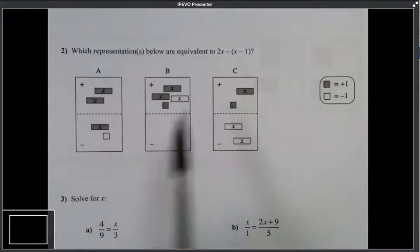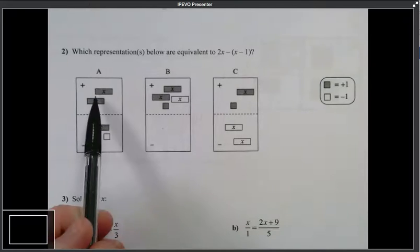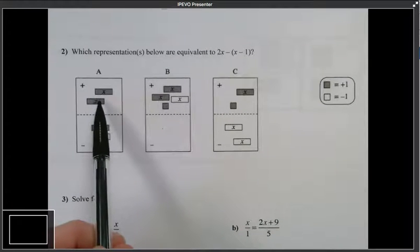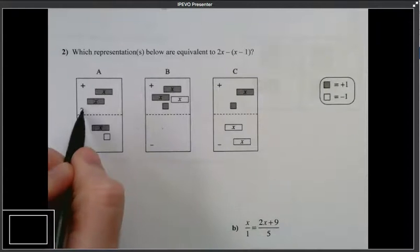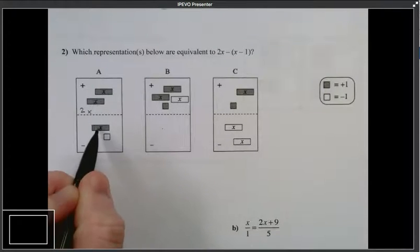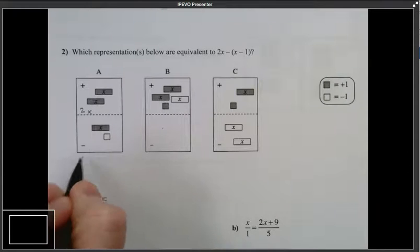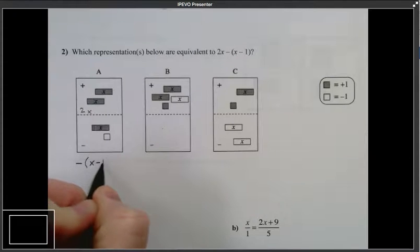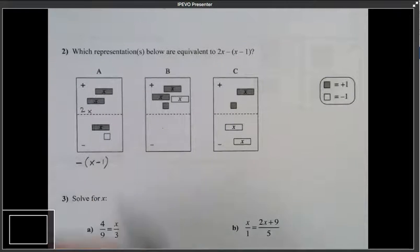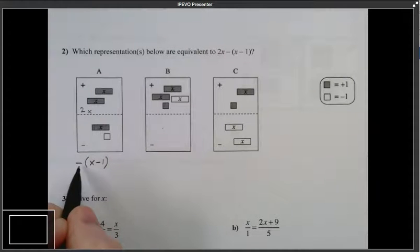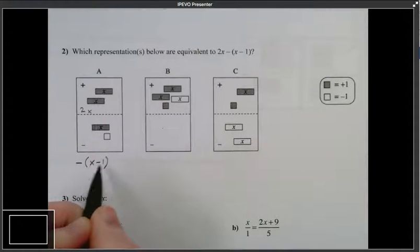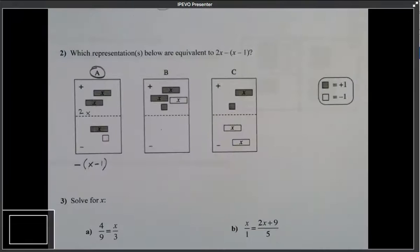Okay, so first of all, let's take a look at A. Remember the darks are positive, so I have 2x up here. This is 2x. And down below, I have x minus 1. So this expression is x minus 1, the opposite of. 2x minus the quantity of x minus 1. So A is for sure one of the representations.